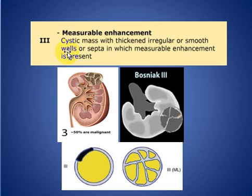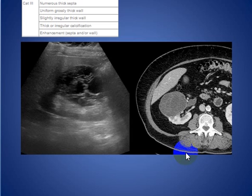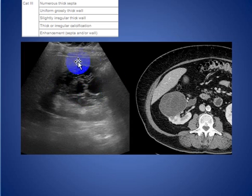Type 3: there is enhancement of the cystic mass, with thick irregular smooth wall and enhancement of the septa. As we see here, more than a few septa with enhancement and thickening. Here we see multiple septa with minimal enhancement, as seen on both ultrasound and CT scan.